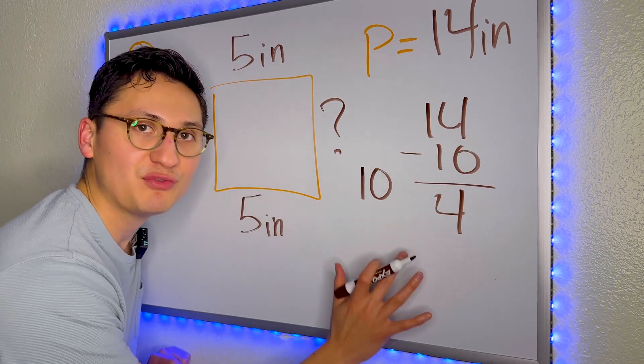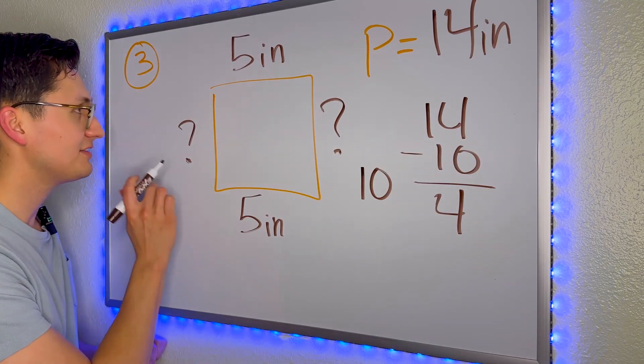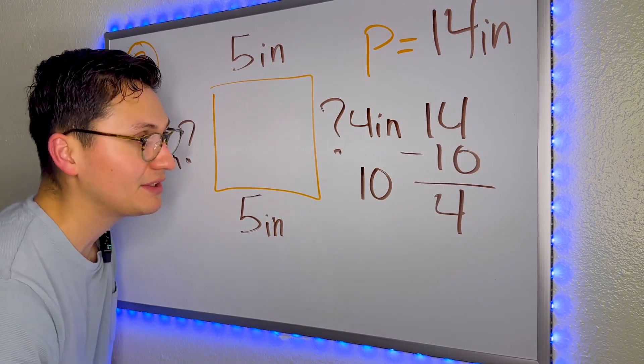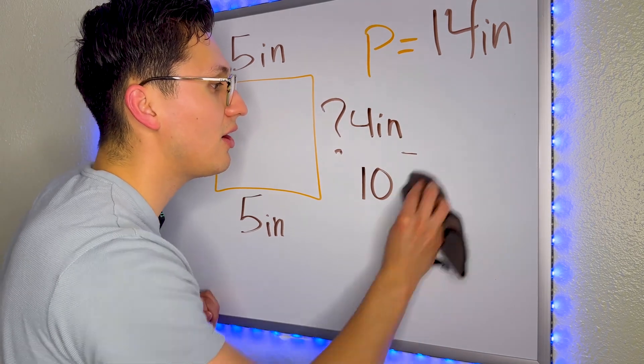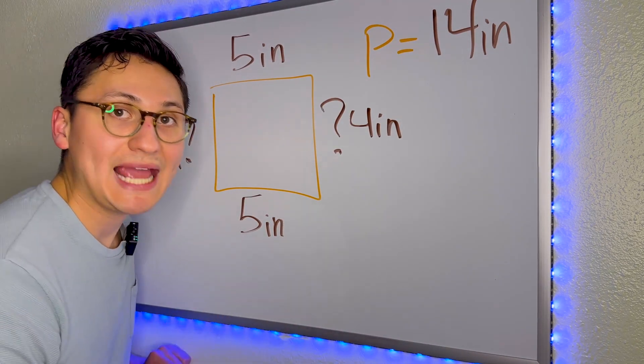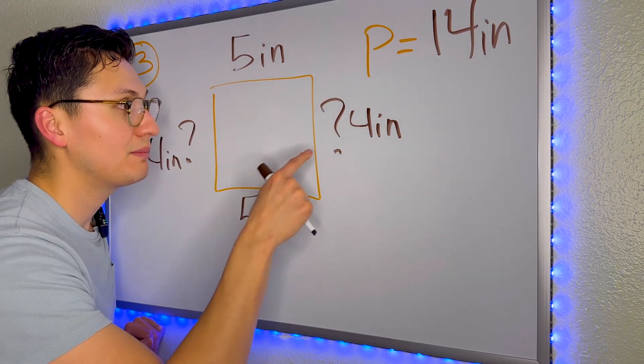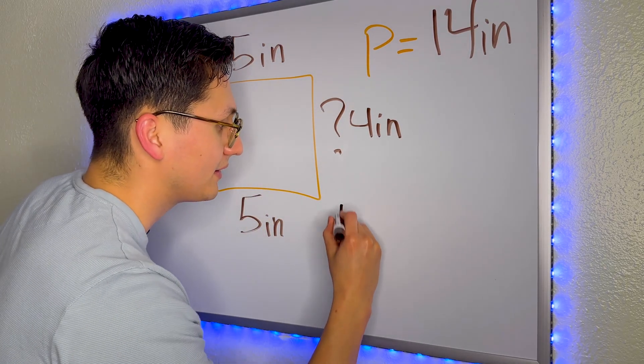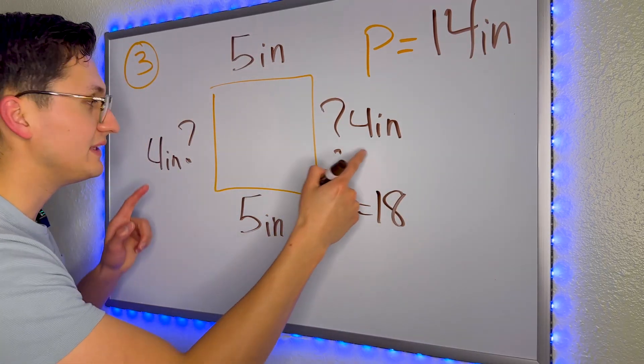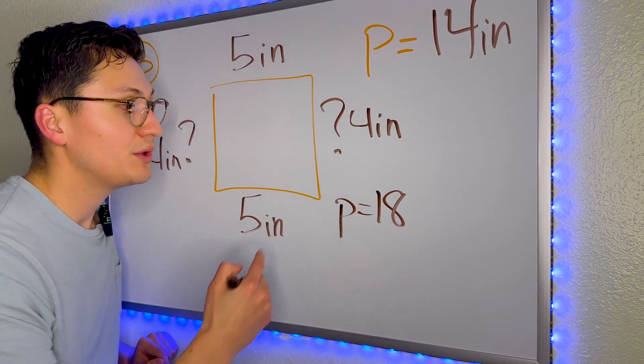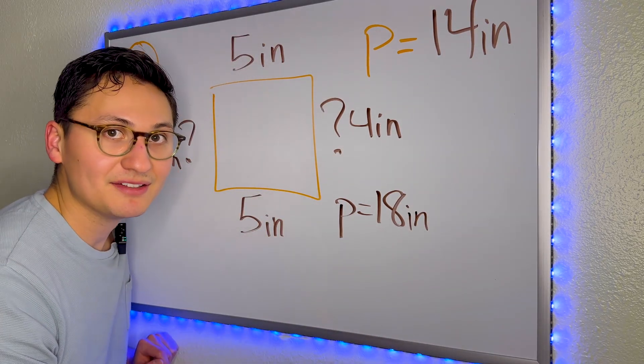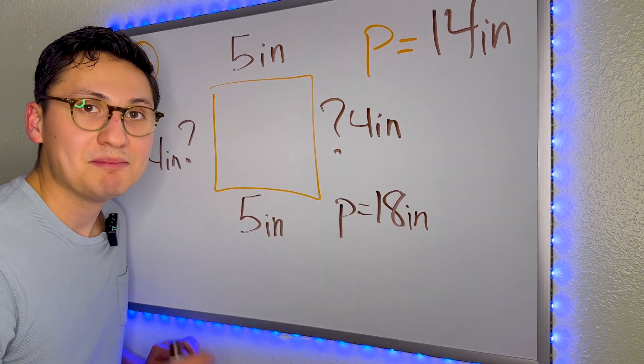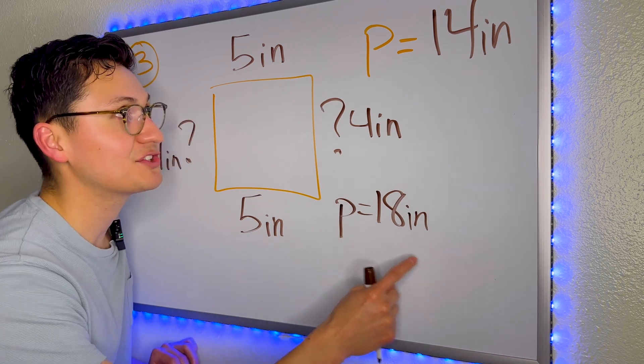Now, what should we do with this 4? Does this 4 mean that this side is 4 inches and this side is 4 inches? Well, we can test it out, right? Because the way we find perimeter is by adding all the sides together. So when we add, we're going to get 5 plus 5 is 10, plus 4 is 14, plus 4 is 18. So the perimeter of this shape, if these two sides were 4 inches, would be 18 inches. But they're telling us that the perimeter is actually 14. So it cannot be 4. It must be something lower because 18 is greater than 14.